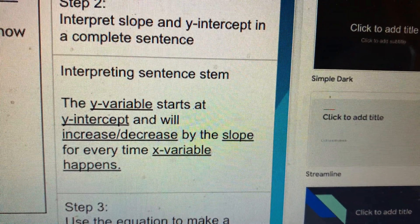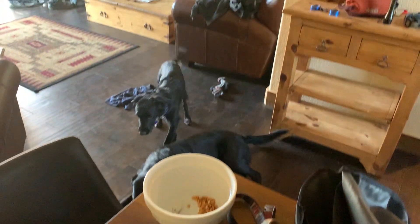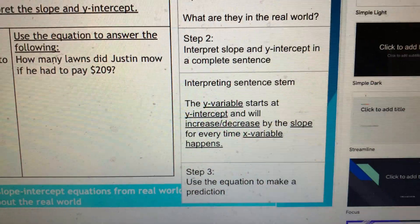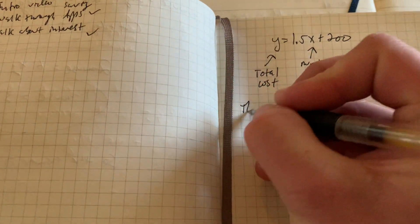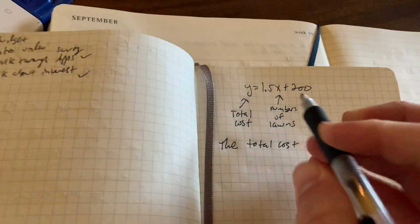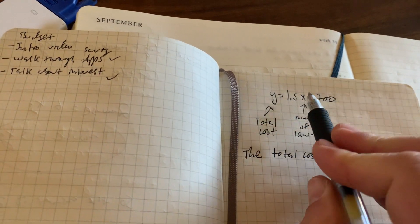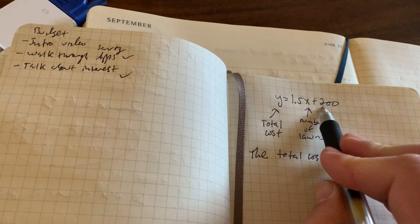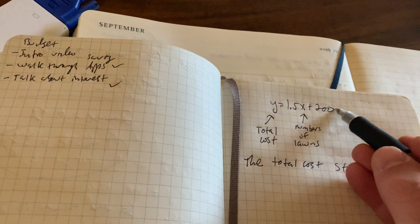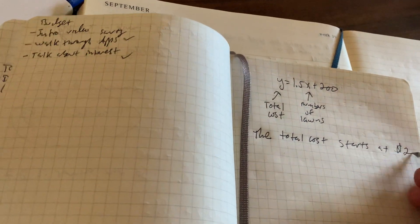Now we're ready to interpret. Remember, our interpretation sentence stem always starts with whatever the Y variable label is. The Y variable starts, so we always start the sentence with the Y variable. I'm going to go with the Y variable I labeled as the total cost. So the total cost starts at the Y-intercept. The Y-intercept is always the number that's alone. The number with X is always your slope. So the number, usually at the end, but the order doesn't matter. We could flip-flop these if we wanted. But since the 200 has no variable, we know that is the Y-intercept.